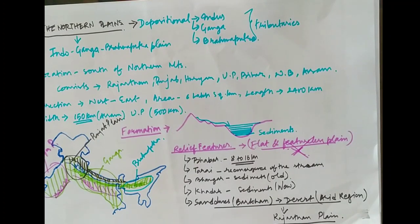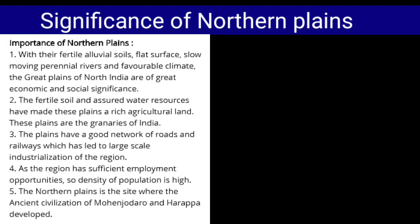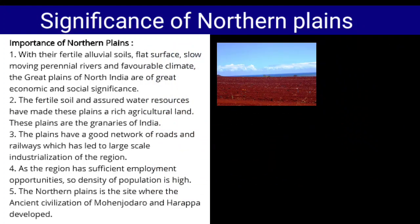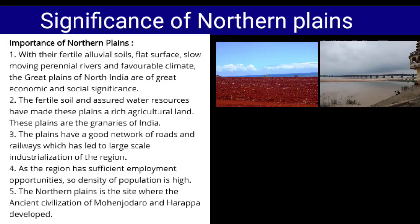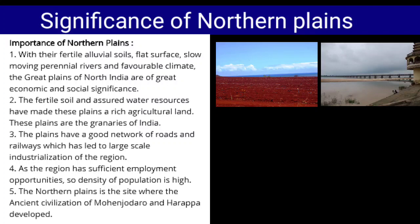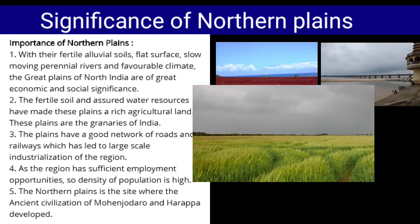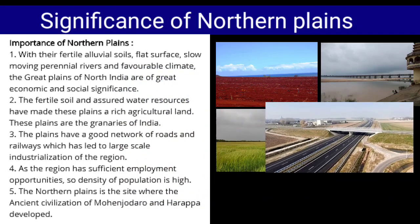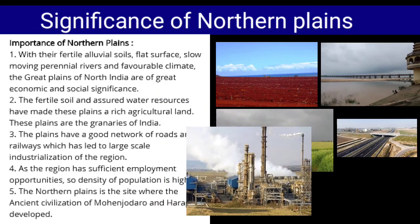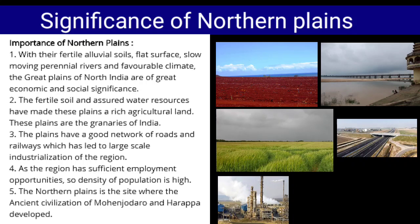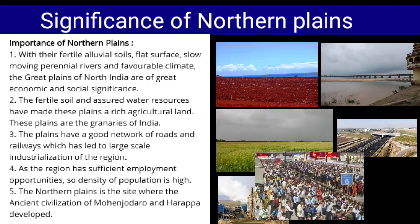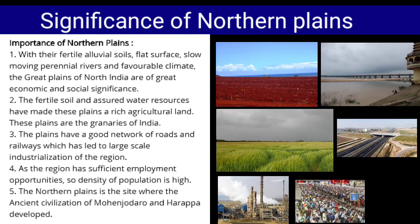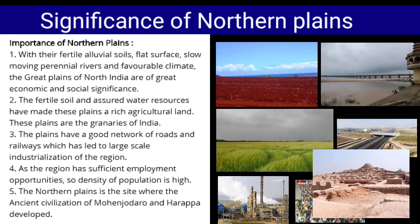Northern plains also have great importance for the economic and social development of India because of fertile soil, flat surface, slow-moving perennial rivers, and favorable climatic conditions. Because of the fertile soil and water resources, this area has great agricultural productivity and is termed as the granary of India. Due to the flat surface, a good network of roads and railways are present, which has led to industrialization. Due to industrialization and agriculture, sufficient employment opportunities are there, so density of population is very high. The ancient civilizations of Mohenjodaro and Harappa also developed in the northern plains of India.